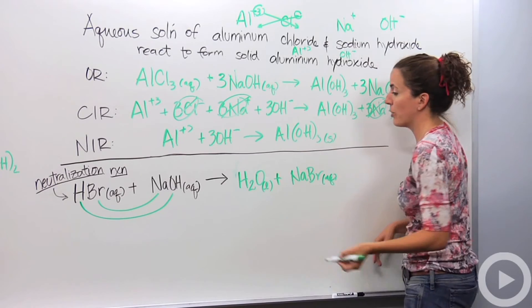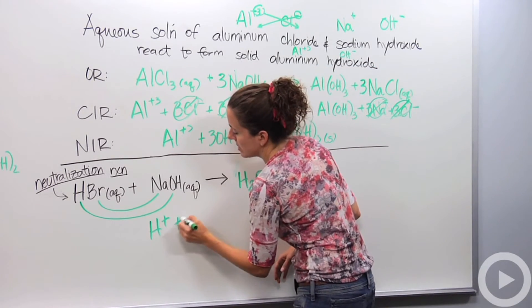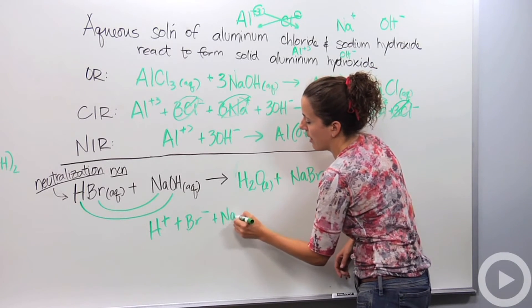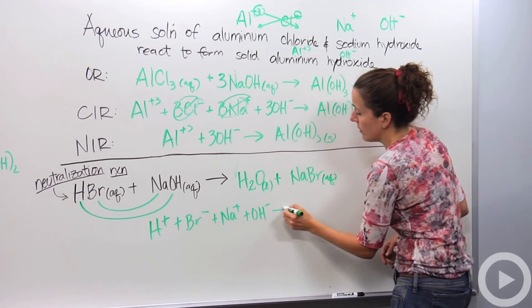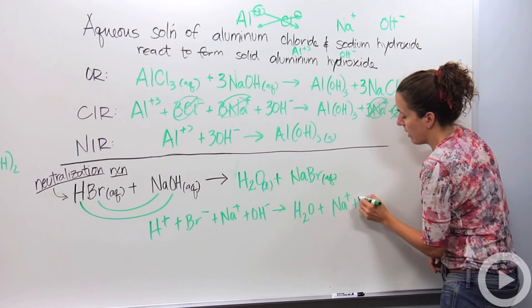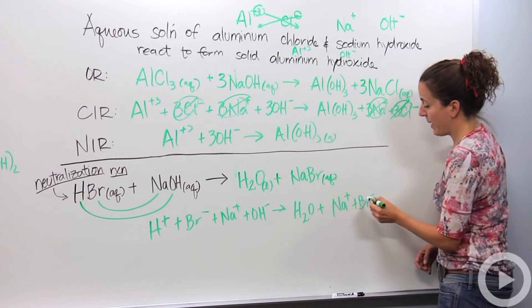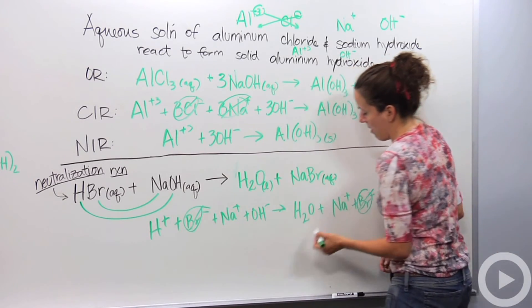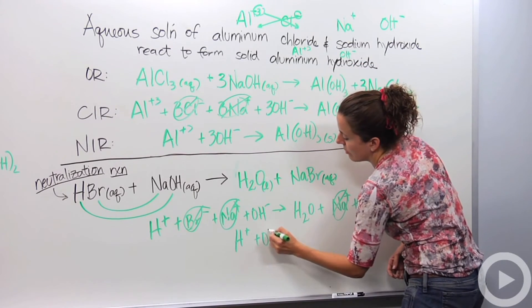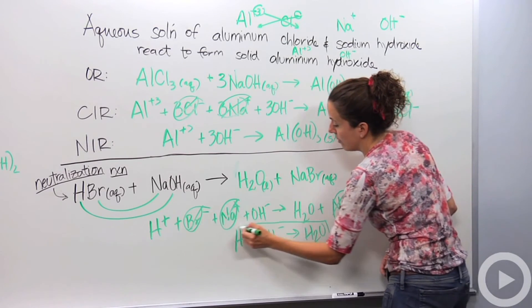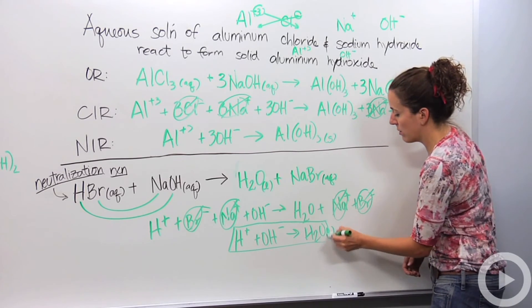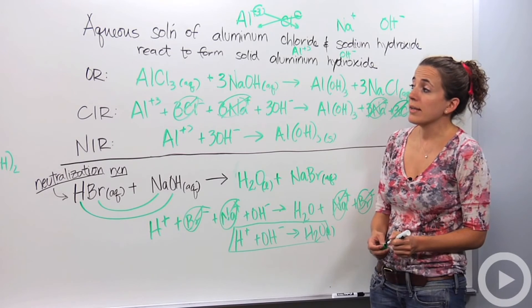Let's do it: H plus plus Br minus. Did we make sure it's balanced? Yeah, it's balanced. Br minus plus Na plus plus OH minus yields H2O. We're keeping it together because it's a liquid. And NaBr: Na plus and Br minus. We break up, we cross out our spectators. Br is a spectator, Na is a spectator. So we're left with H plus plus OH minus yields H2O as our final reaction. This is common also. This can be a net ionic equation. And that's pretty much how you do net ionic equations.